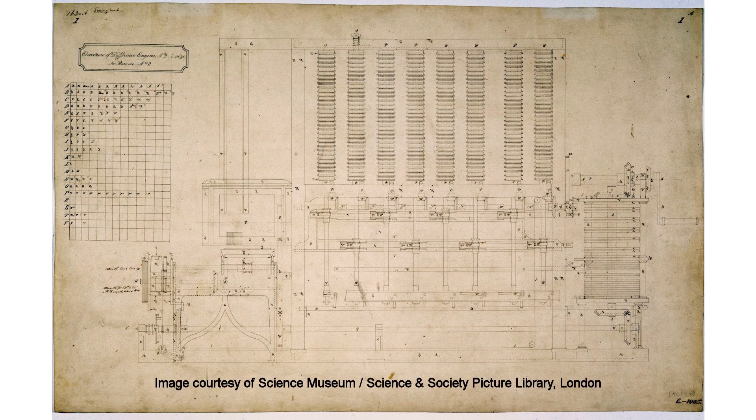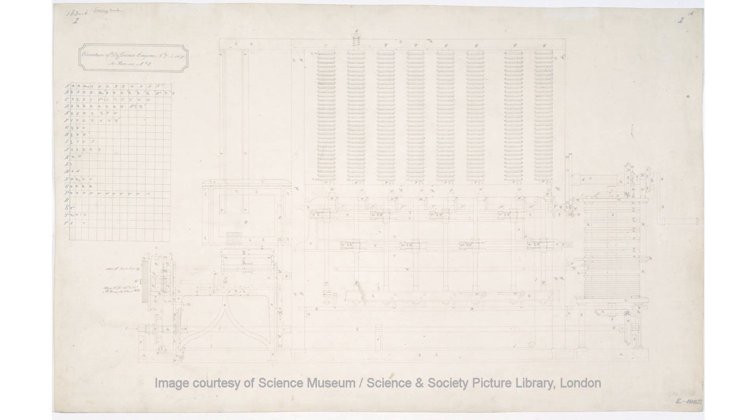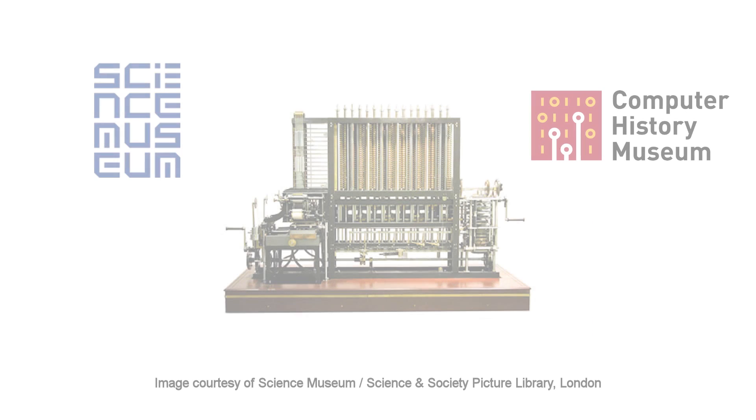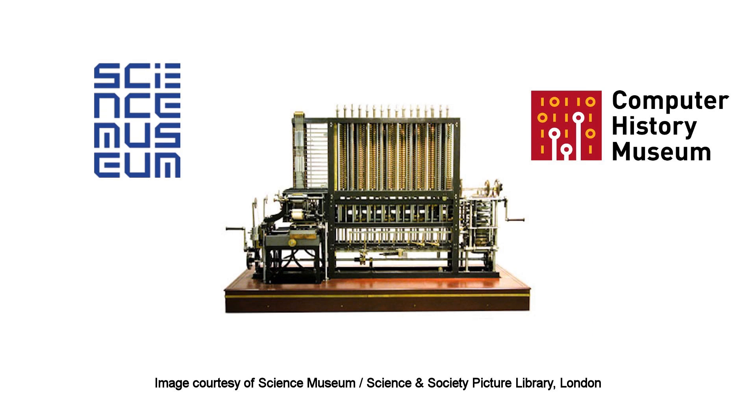Difference Engine No. 2 remained a paper design until the Science Museum in London built the calculating portion of the machine in 1991 and the printer in 2002. A second Difference Engine has also been built and is currently on display at the Computer History Museum in Mountain View, California.